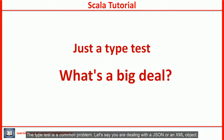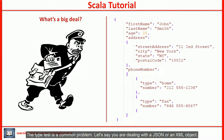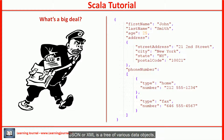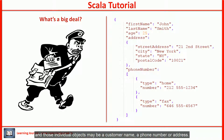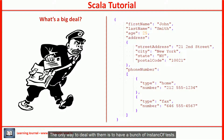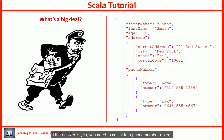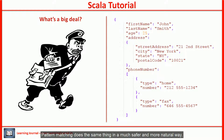The type test is a common problem. Let's say you are dealing with a JSON or an XML object — a tree of various data objects. Those individual objects may be a customer name, a phone number, or an address. You don't know the type of each element. The only way to deal with them is to have a bunch of instanceof tests, asking: is this a phone number? Is this a customer name? If yes, you need to cast it. This approach is rather ugly and clumsy. Pattern matching does the same thing in a much safer and more natural way.